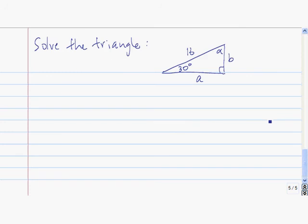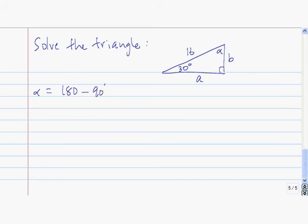One great use of trig functions is in solving triangles — finding the unknown dimensions. Since this is a right triangle with a 30-degree angle, alpha is easy to find. We know that the sum of the angles of a triangle is 180 degrees. So alpha equals 180 degrees minus the right angle minus 30 degrees, which equals 60 degrees.